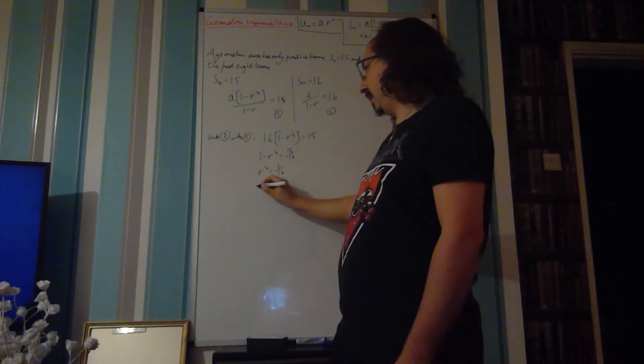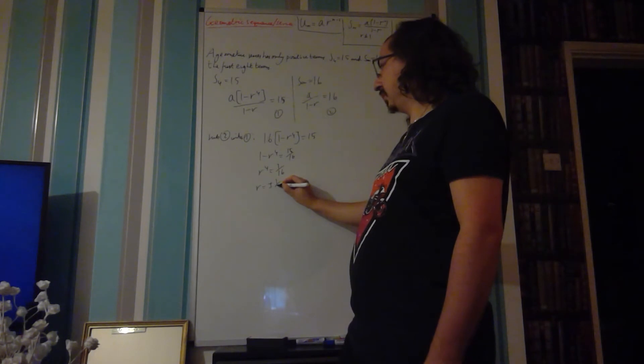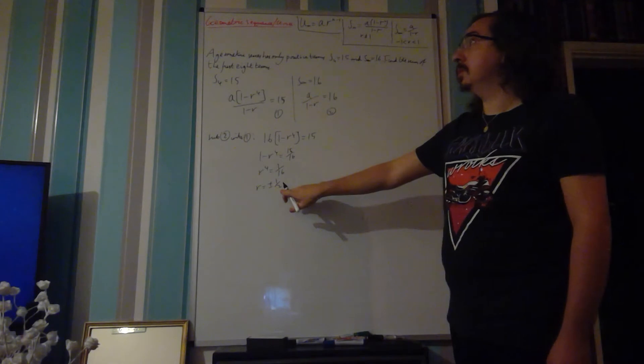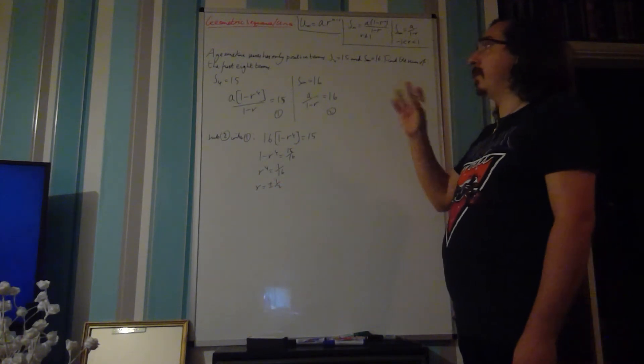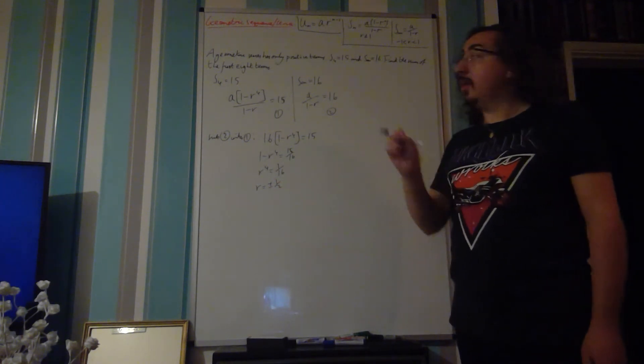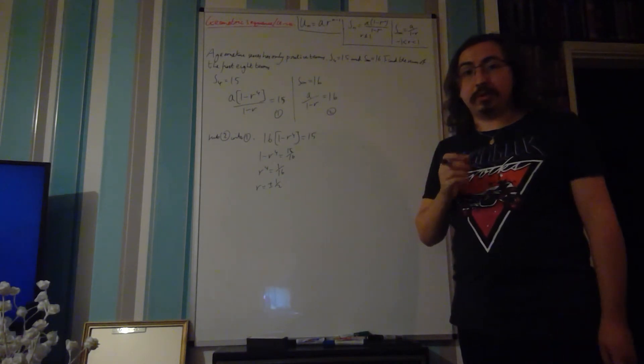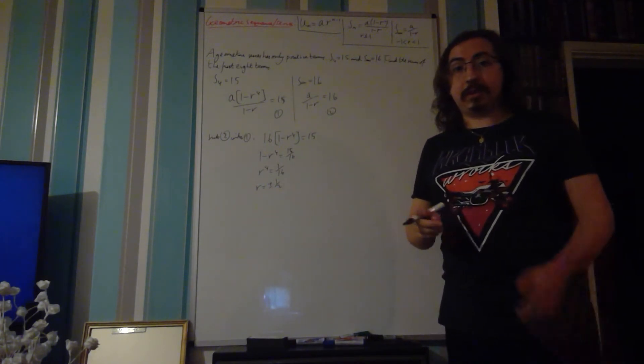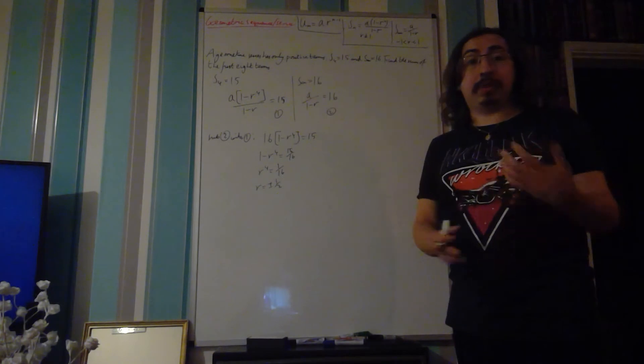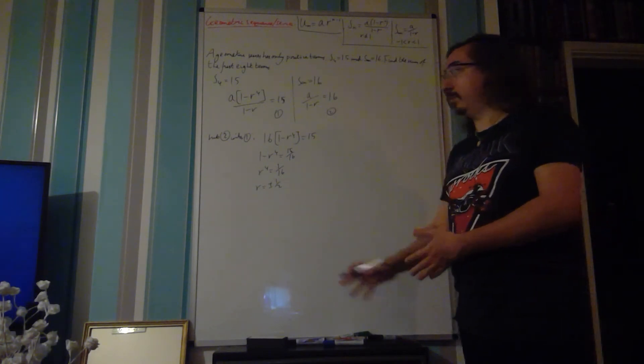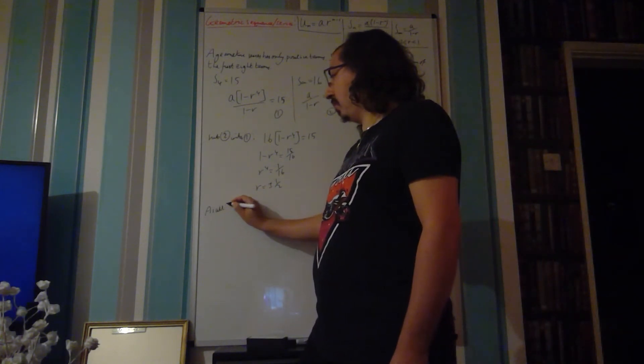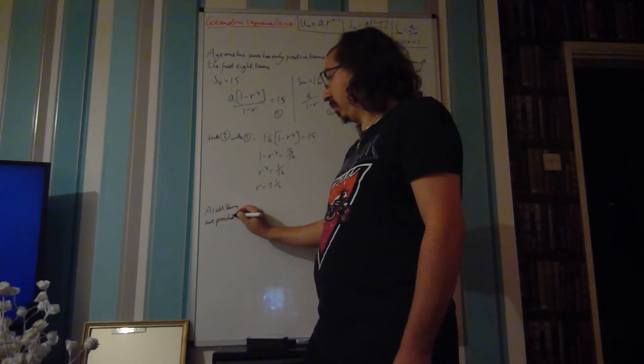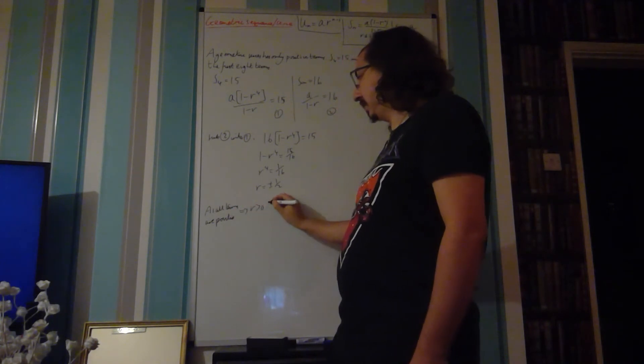If you take the fourth root, r equals plus or minus a half. That's important that we get two values for r. However, the question tells us the geometric series has only positive terms, which means r can't be negative because that would generate negative terms every other term. So all terms being positive implies that r must be greater than 0.